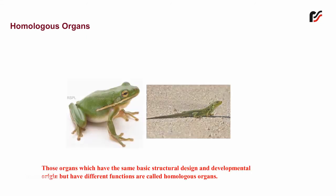Homologous organs. Those organs which have the same basic structural design and developmental origin but have different functions are called homologous organs.